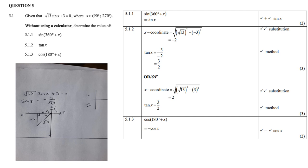5.1.2: tan x. To find tan x, make sin x the subject of the formula. Take 3 over: it becomes −3, then divide by √13, giving sin x = −3/√13. Since x is in the second and third quadrants, and sin is negative only in the third, the sketch goes there. Using sin = opposite/hypotenuse, and Pythagoras for the adjacent side of −2, tan x = opposite/adjacent = −3/−2 = positive 3/2.